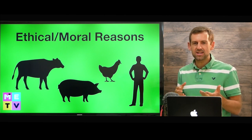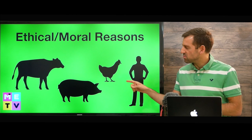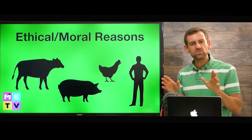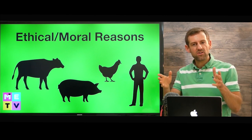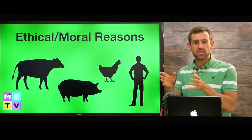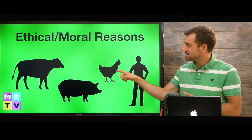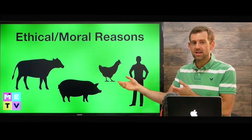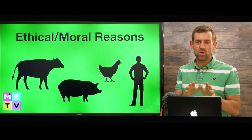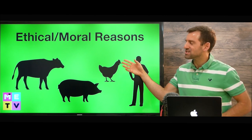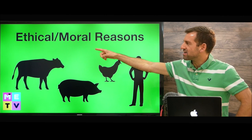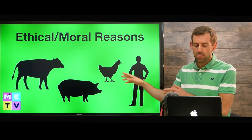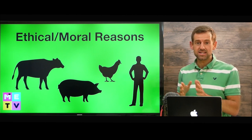Other people might think it's okay to eat animals, except not the way Western society does it. Western society consumes a lot of meat. For example, if you go to a chicken farm in Canada, there are thousands of chickens crammed into small cages. A lot of people say it's wrong to treat animals that way, but it's okay to eat them as long as they're treated well. There are a whole bunch of different reasons why someone might have ethical or moral concerns about eating animals.